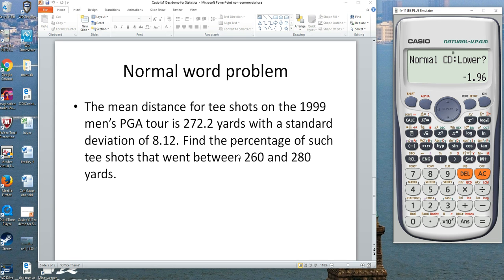Why don't we just put in a lower bound of 260, an upper bound of 280. Now for our standard deviation, put in this number, 8.12. Our mean is 272.2. And you automatically get your answer.